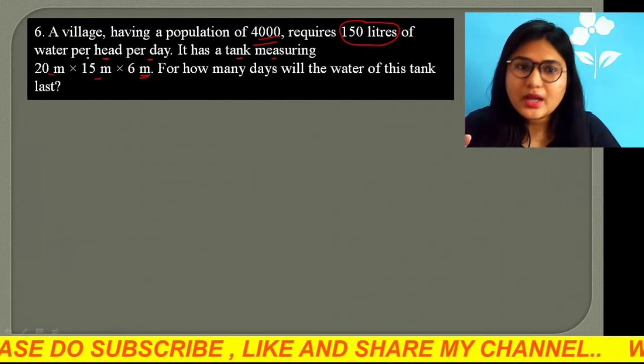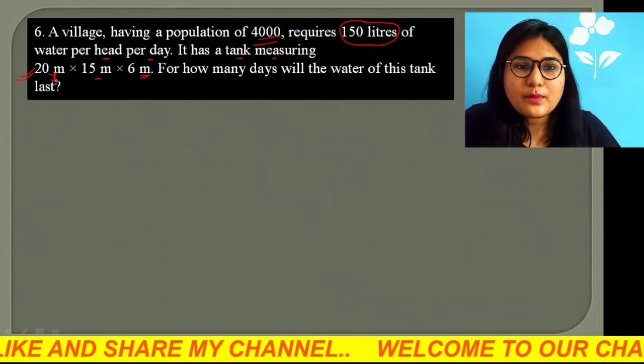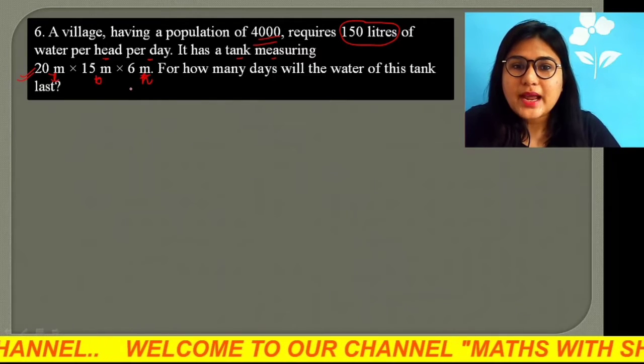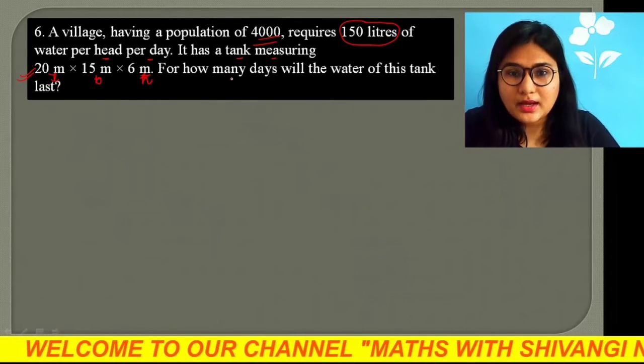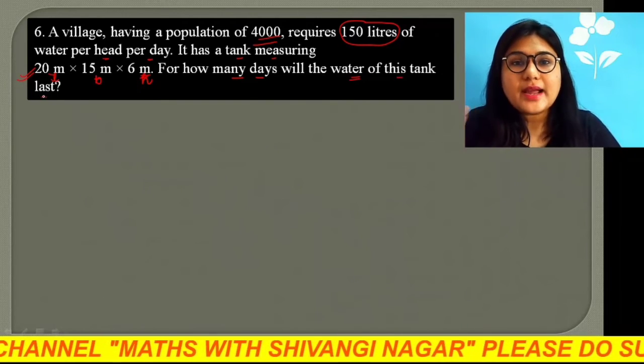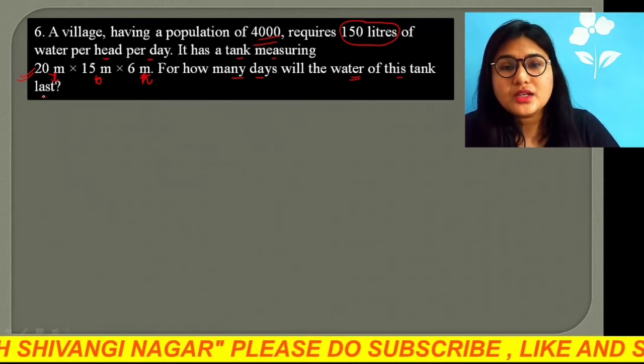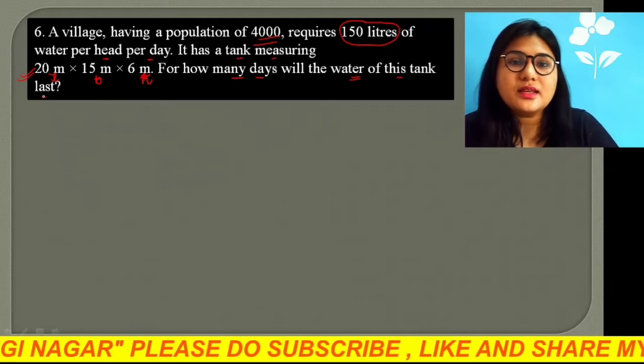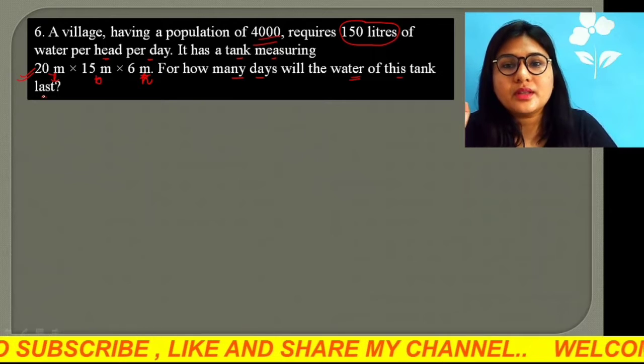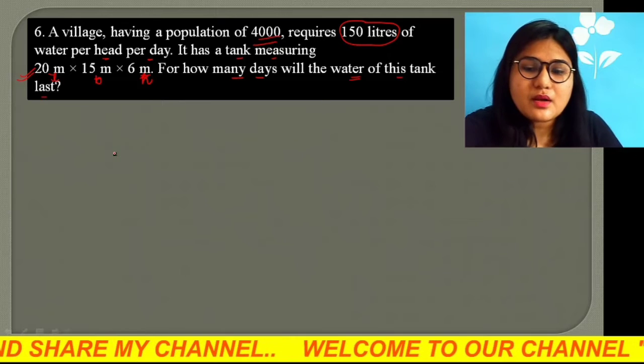Now what is it? A water tank which is given dimensions, so that means it is cuboidal in shape. This is L, B, and this is H. So we are asked, we will store the water in this tank. For how many days will the water of this tank last? For how long will this water in this tank last? So we have to find out this. So let's see how we will solve this.